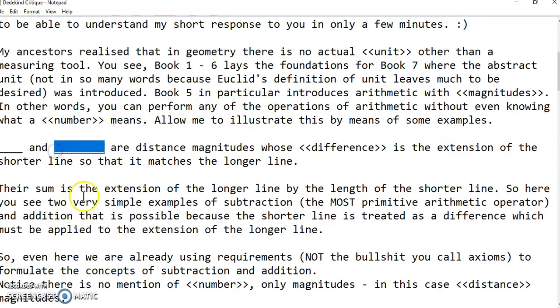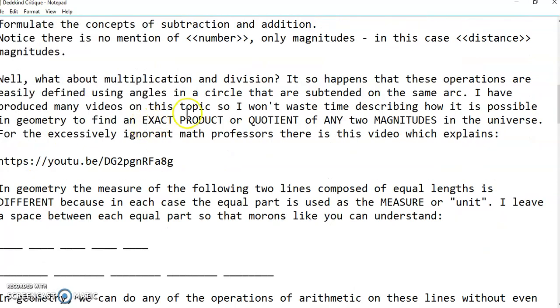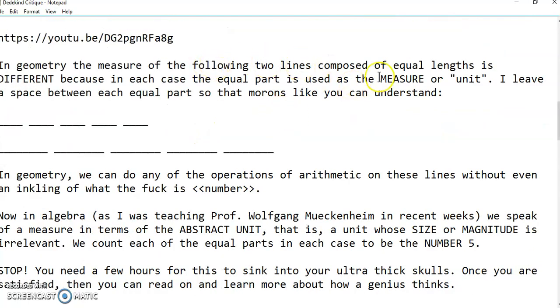Likewise, this here is not a line. It's just a symbol for a line. The actual definition of a line, a straight line, is the shortest distance between two points. I've explained some of the stuff in the previous video, so I don't want to spend too much time on it. But in geometry, the measure of two lines composed of equal lengths is different. Because in each case, when I say equal lengths, I mean the lines divided into equal lengths. What you see here in front of you has a space between each equal length. But if you just join them together, they're one line. What happens is we use one of these equal segments to measure each of these lines.